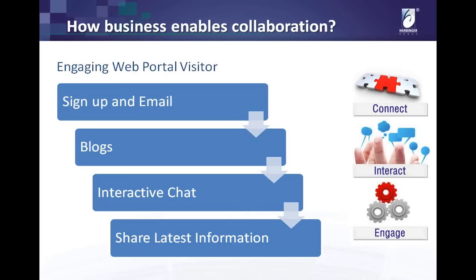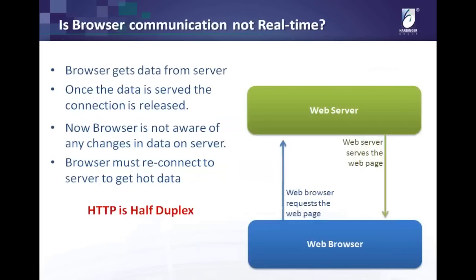Is the online application from the web browser not real-time communication? Let us understand how this is done traditionally. The browser makes a request to the server, gets the information, and the connection is broken. The information is real-time only at the time of request. As time passes, this information becomes stale. If information gets updated on the server side, there is no way for the server to connect to the browser and update it. For the user to remain updated, they must request to the server again and again. This is a half-duplex model.